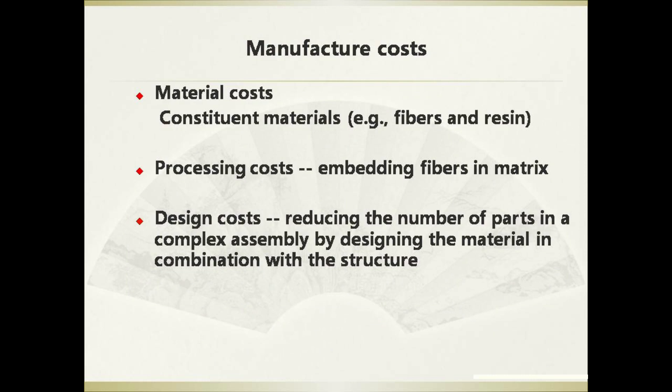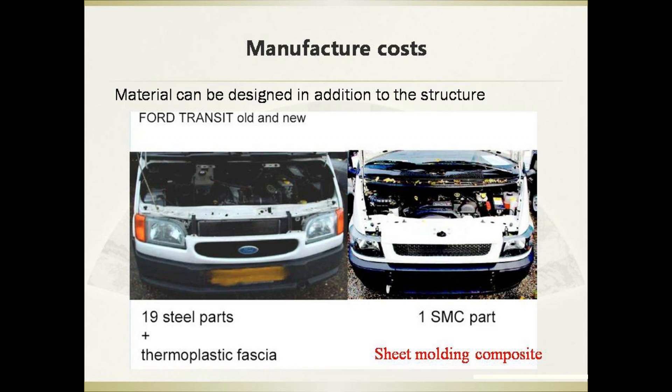The manufacture cost of composite materials comes from three aspects. The first is material costs — we need to buy the constituent materials like fibers and resin. The second is processing costs — we need to embed the fibers into the matrix, and this process incurs costs. The third is design costs — we need to reduce the number of parts in a complex assembly by designing the material in combination with the structure.